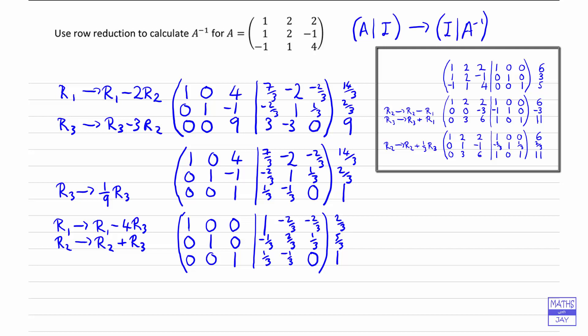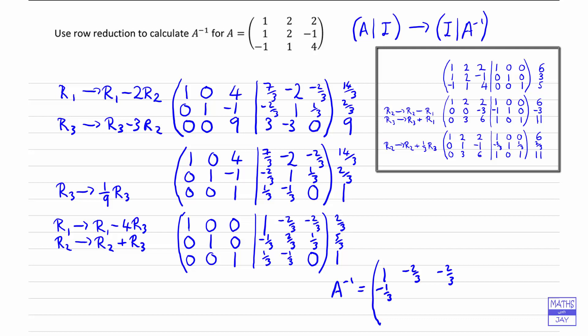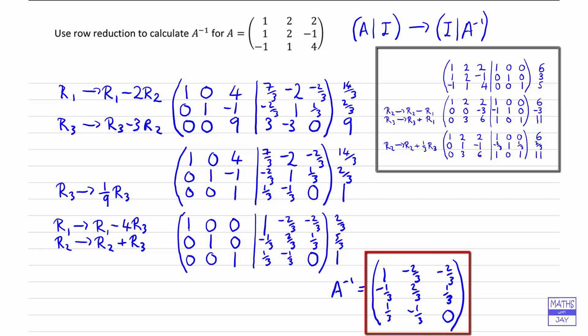So we have found the inverse of matrix A, and if you want to check this properly, you would of course multiply the matrix A by its inverse and check that you do get the identity matrix. So let's just write that down. The inverse matrix is: row 1 is 1, negative 2 thirds, negative 2 thirds; row 2 is negative 1 third, 2 thirds, 1 third; row 3 is 1 third, negative 1 third, and 0.